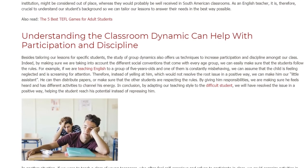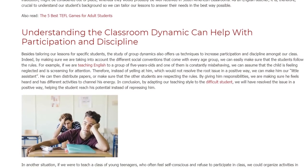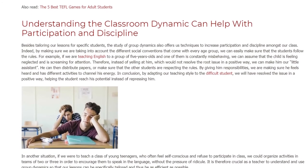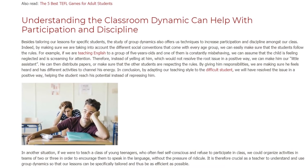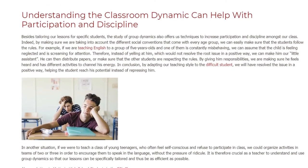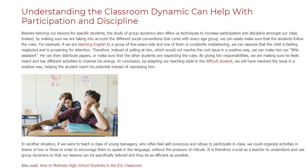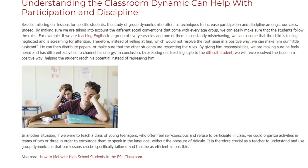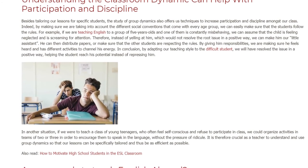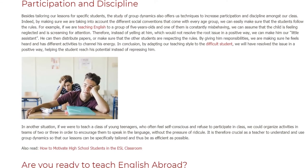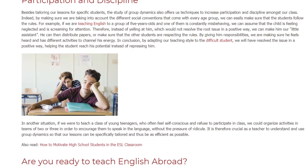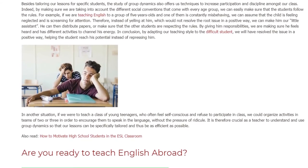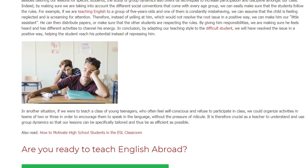Therefore, instead of yelling at him — which would not resolve the root issue in a positive way — we can make him our little assistant. He can then distribute papers or make sure that the other students are respecting the rules. By giving him responsibilities, we are making sure he feels heard and has different activities to channel his energy. In conclusion, by adapting our teaching style to the difficult student, we will have resolved the issue in a positive way, helping the student reach his potential instead of repressing him.